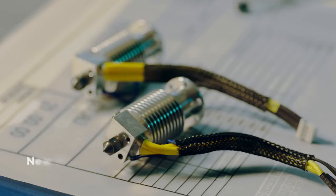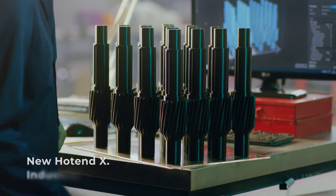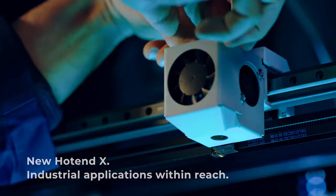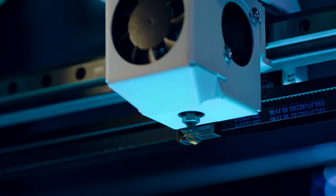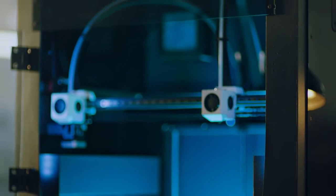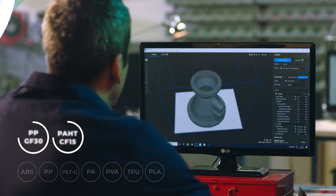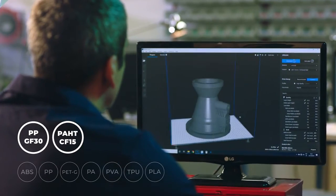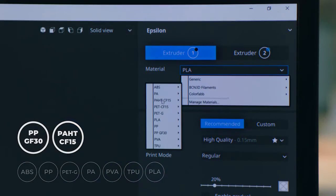Our new hotend EX, made from a special alloy of tool steel, opens up a whole new world of industrial applications. When paired with the BCN 3D Epsilon, it allows you to print with fibre-filled materials, so you can print stiffer parts for the most demanding jobs.